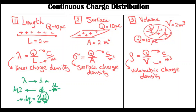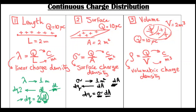Similarly, sigma is the charge present in one meter squared. If we have a small area element dA, the charge in that element is dq equals sigma times dA. Sigma, being charge per meter squared, must be multiplied by area. And for the volumetric case, dq equals rho times dV, where dV is a very small volume element.